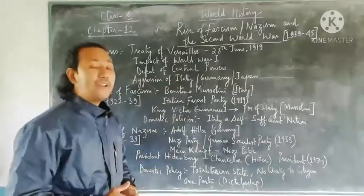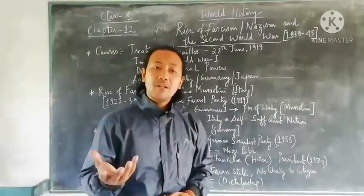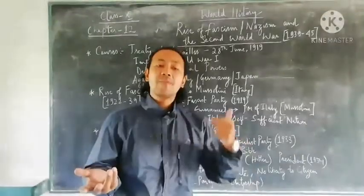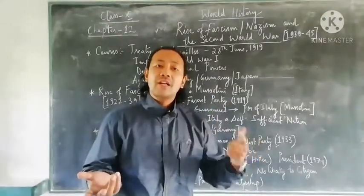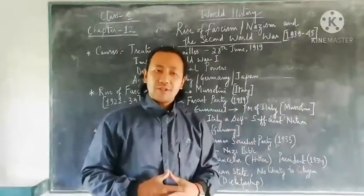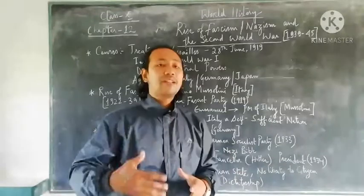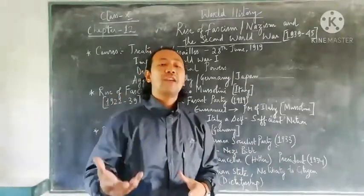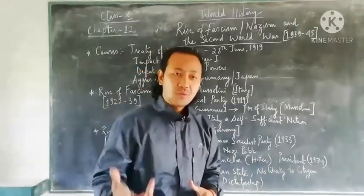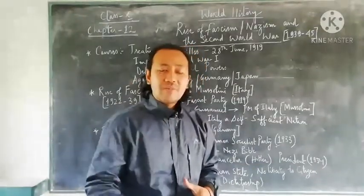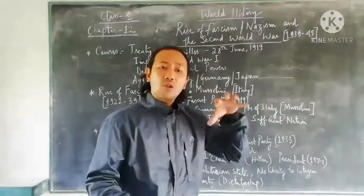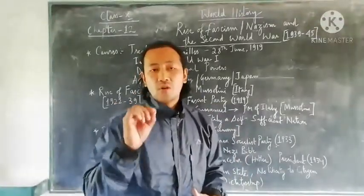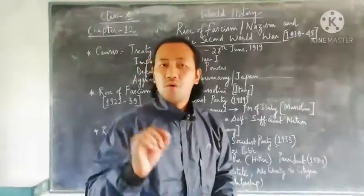The third point is the defeat of the central powers. The central powers consisted mainly of countries like Bulgaria, Germany, and smaller European nations. After they were defeated in the First World War, they faced humiliation and discrimination from all the superpowers, and this also became a major cause leading to the eruption of the Second World War.